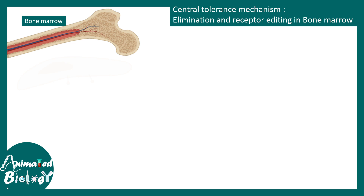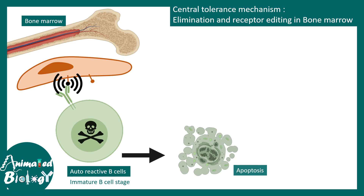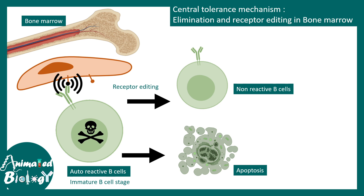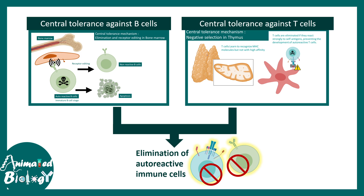Just like T-cells, B-cells can also recognize self-antigens during the immature B-cell stage, where the B-cell receptor is supposed to recognize antigens. Autoreactive B-cells are those which recognize self-antigen with very high affinity and must be eliminated by apoptosis. In the case of B-cells, there is also a process known as receptor editing, where the B-cell receptor is completely changed to ensure low affinity toward self-antigens. Only then can these non-reactive B-cells survive. Central tolerance thus eliminates all autoreactive immune cells, protecting the body.